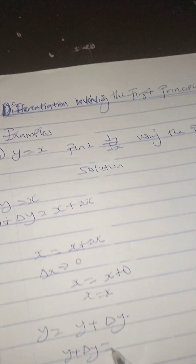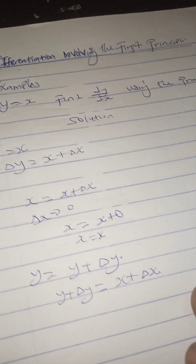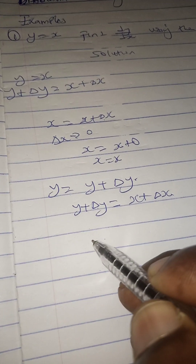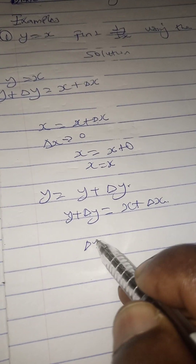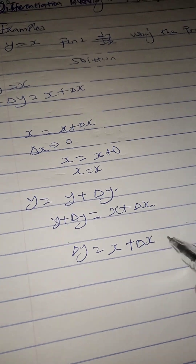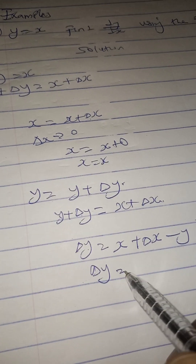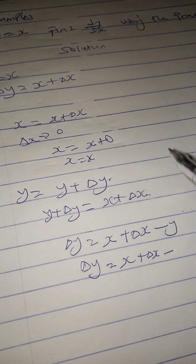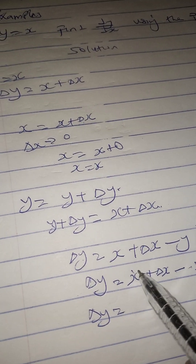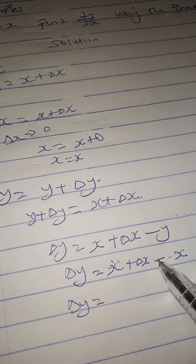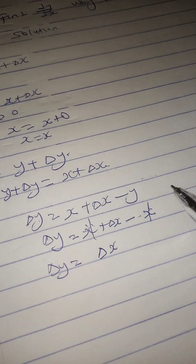So since y plus δy is equal to x plus δx, we make δy the subject. We bring y to the right-hand side: δy equals x plus δx minus y. Since our y equals x, we substitute: δy equals x plus δx minus x. The x terms cancel out, and we are left with δy equals δx.